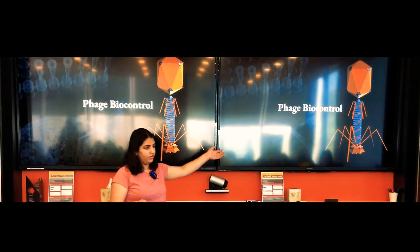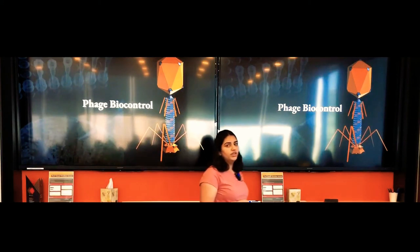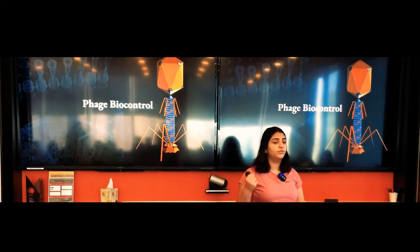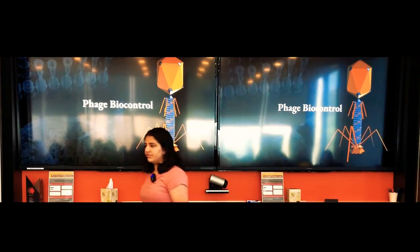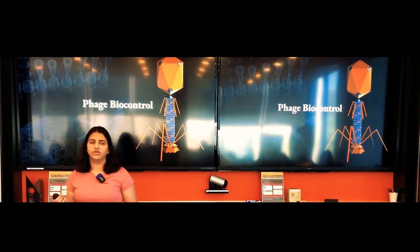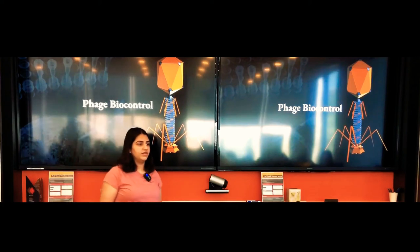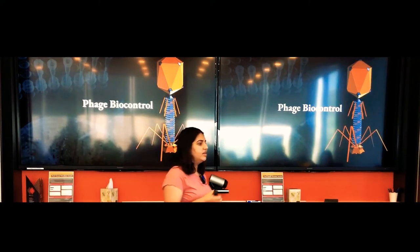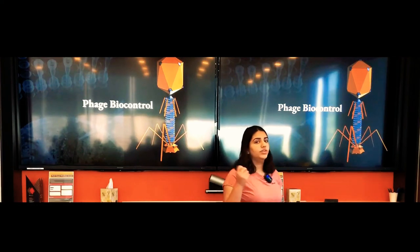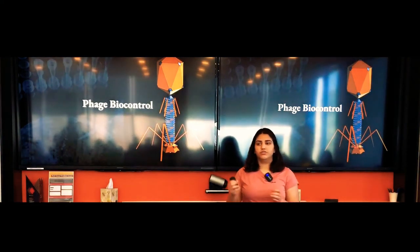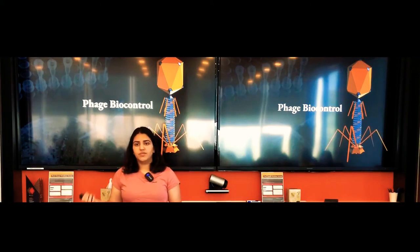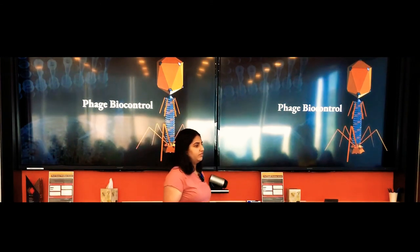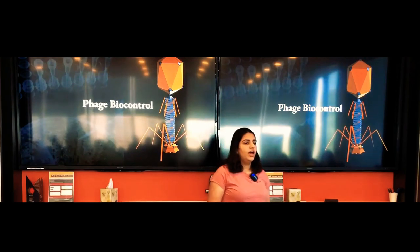The second method is phage biocontrol, used to completely eradicate the harmful bacteria from foods. In phage biocontrol, we use lytic phages to eradicate the harmful bacteria without harming the normal microflora in the foods. For this method to work, we need strongly lytic phages, preferably with a very broad host range.